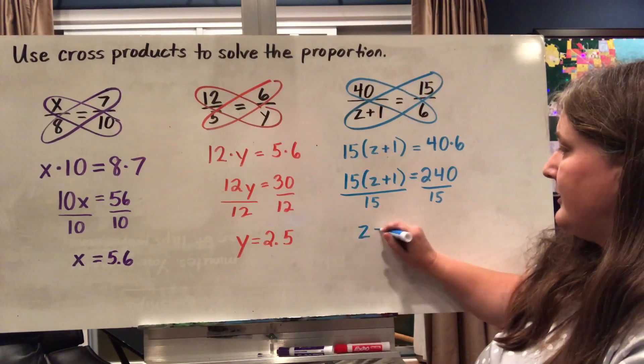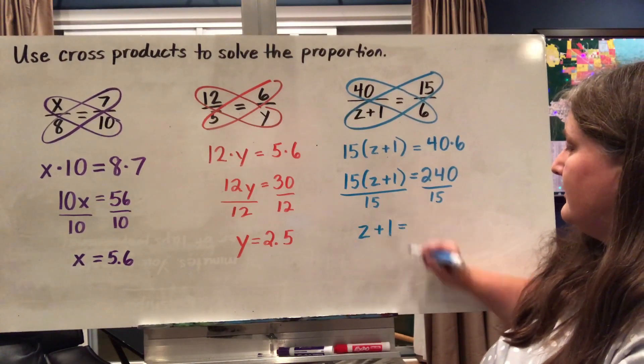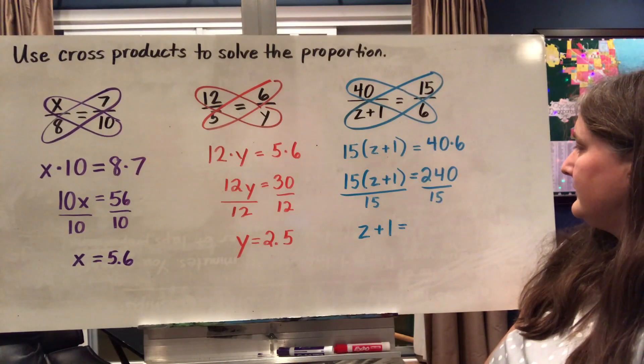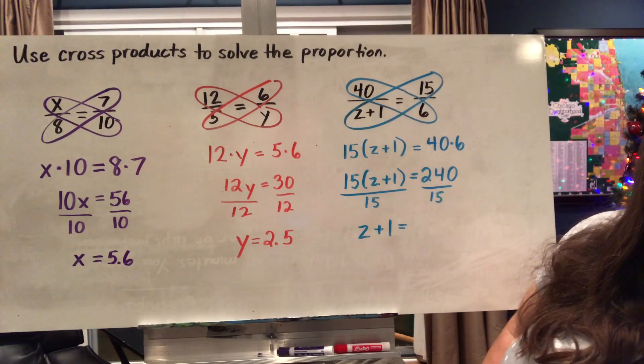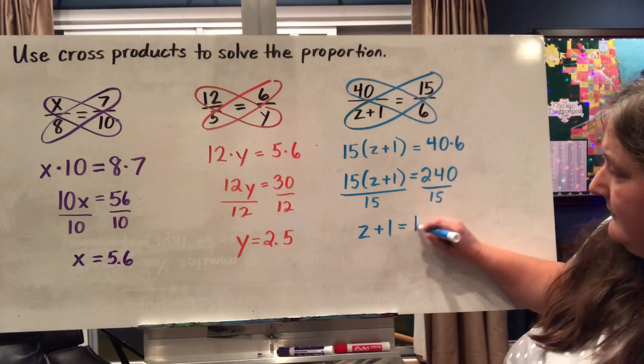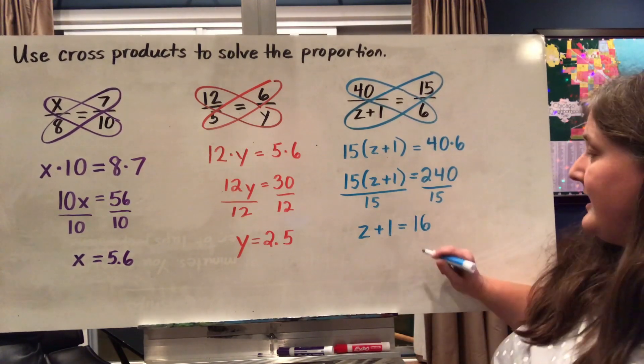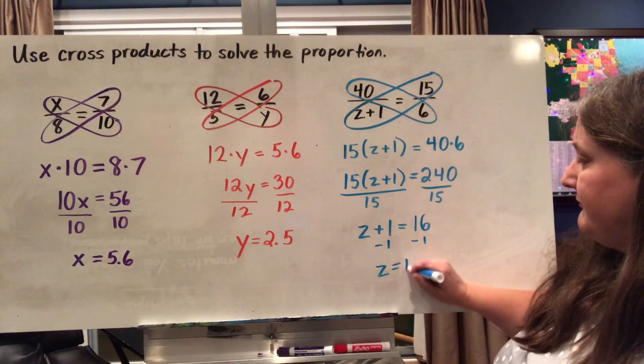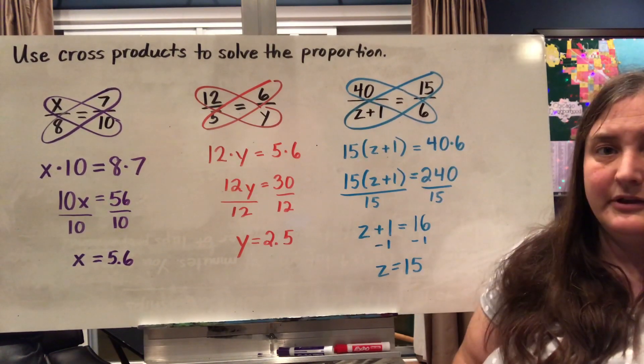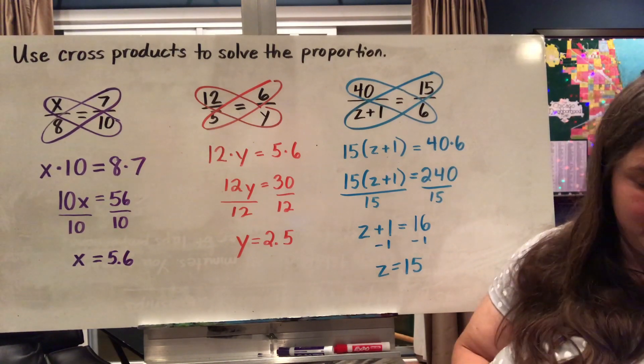And I'm going to divide both sides by 15 here to get rid of the 15. So I'll be left with z plus 1 equals 16. And I'm going to subtract 1 from each side and I get z equals 15. So in this case, z would equal 15 in this problem.